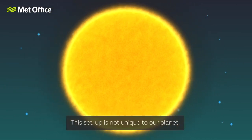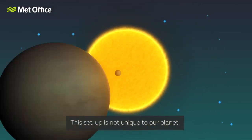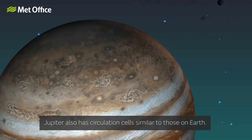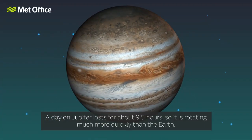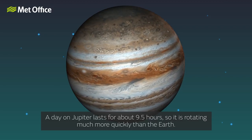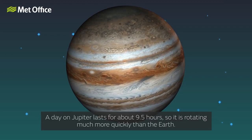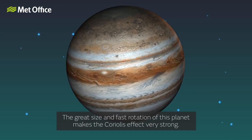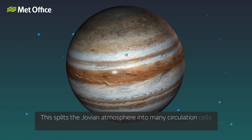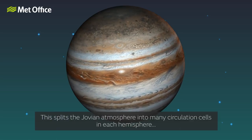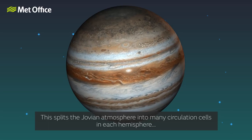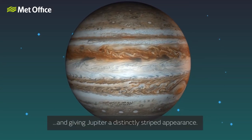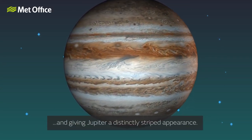This setup is not unique to our planet. Jupiter also has circulation cells similar to those on Earth. A day on Jupiter lasts for about nine and a half hours, so it is rotating much more quickly than the Earth. The great size and fast rotation of this planet makes the Coriolis effect very strong, splitting the Jovian atmosphere into many circulation cells in each hemisphere, producing numerous alternating bands of rising and falling air and giving Jupiter a distinctly striped appearance.